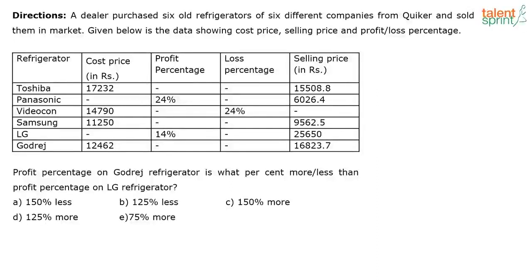The next question is on your screen. This was a question on data interpretation. Let us see how to solve it. A dealer purchased six old refrigerators of six different companies from Quikr and sold them in the market. Given below is the data showing cost price, selling price, and profit or loss percentage. This is a question on missing DI, wherein some information is not given. We will have to fill in the information for the question based on what is asked.